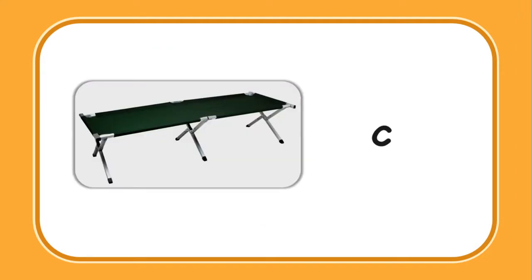Try this one: something you sleep on, maybe when camping. Do you know what that is, Polly? I'm not sure what that is. Let me help you — that is a cot. Cot! So what family do I need? The -ot family, O-T. Very good. And what is that again, Polly? A cot.